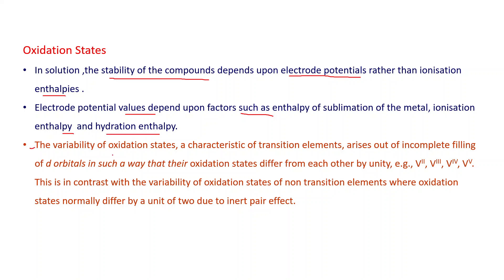The variability of oxidation states, which is a characteristic of transition elements, arises out of incomplete filling of D orbitals in such a way that their oxidation states differ from each other by unity — a difference of 1 in the oxidation state. For example, vanadium shows +2, +3, +4, and +5.